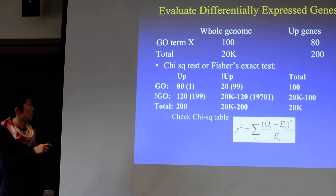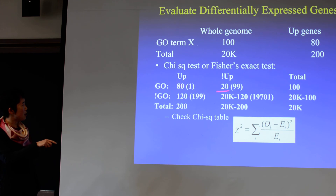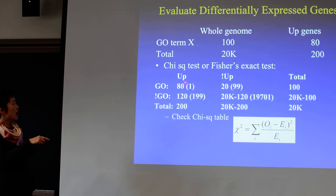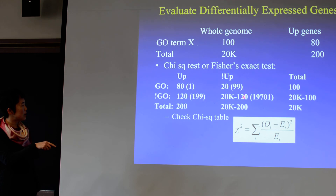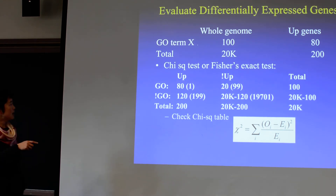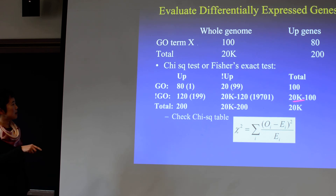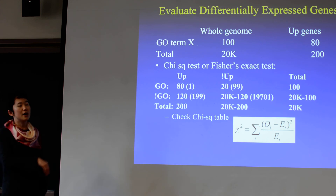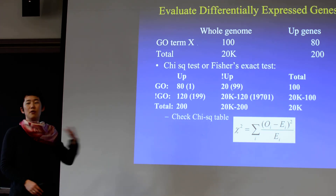Another way to do this is by the chi-square test. This is like a 2-by-2 table: up genes with this GO term, not up genes with this GO term, up genes without this GO term, and not up genes without this GO term. This is what we observed, and the numbers in parentheses are what we expected. The expected for each cell is the row total times the column total divided by the grand total. You compute the chi-square statistic — observed minus expected squared divided by expected — sum over all four cells, check the chi-square table, and you'll get a ridiculously small p-value.